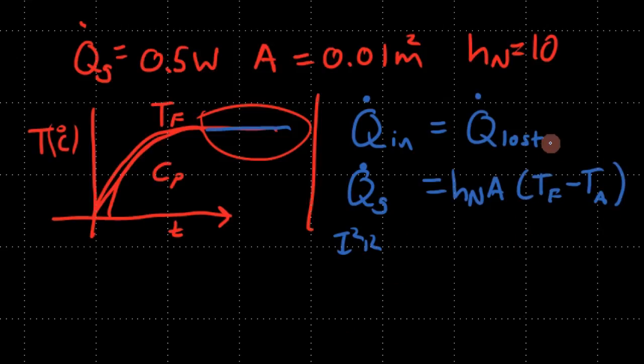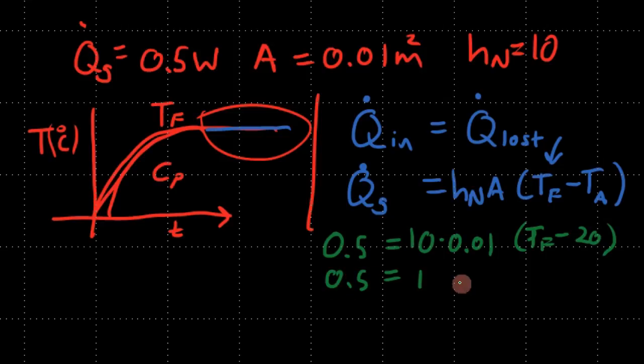So now we want to calculate the final temperature. What did I say T_A was? T_A was equal to 20 degrees. So let's actually calculate. We go with 0.5 equals 10 times 0.01 times (T_F minus 20). This equals 1 times (T_F minus 20). So if we add this to the other side, 20.5 equals T_F.